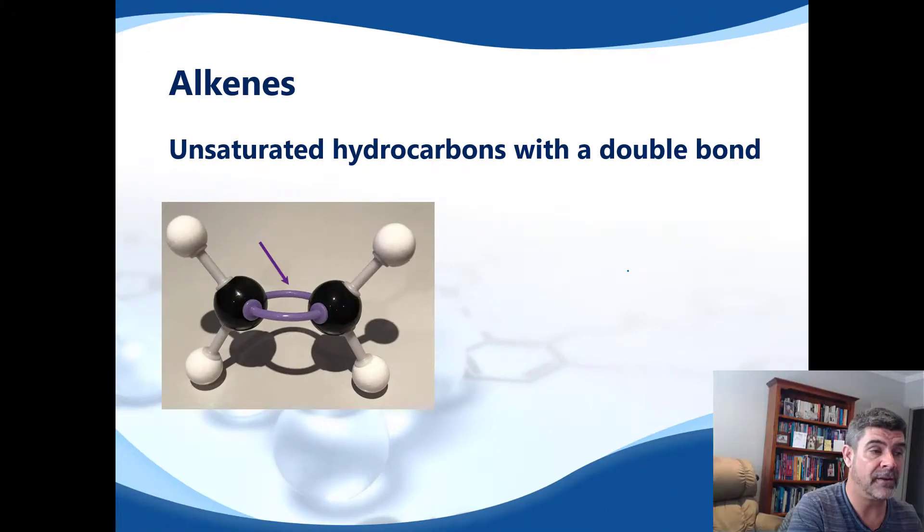The second group of hydrocarbons that we need to look at is the first of our unsaturated hydrocarbons. These are the hydrocarbons that have a double bond. You can see in the example that I have on the slide that we have a double bond in this position here.